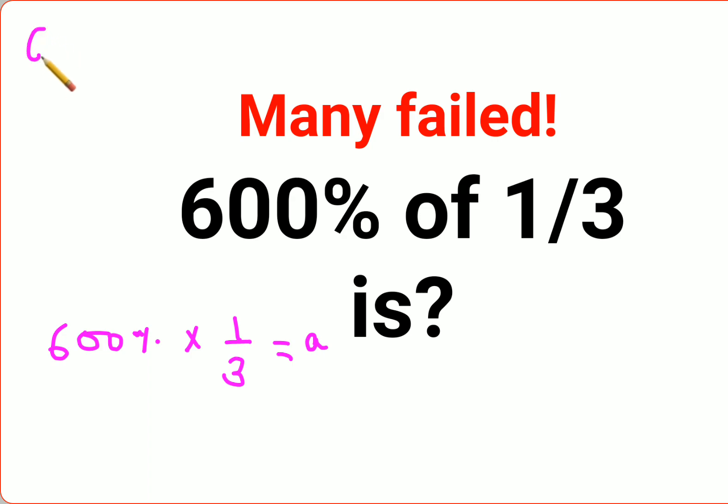Now whenever you have a percent sign ahead of a number, you can convert that percent into a fraction. You just have to divide the number by 100. So we have 600 upon 100, that becomes just 6.